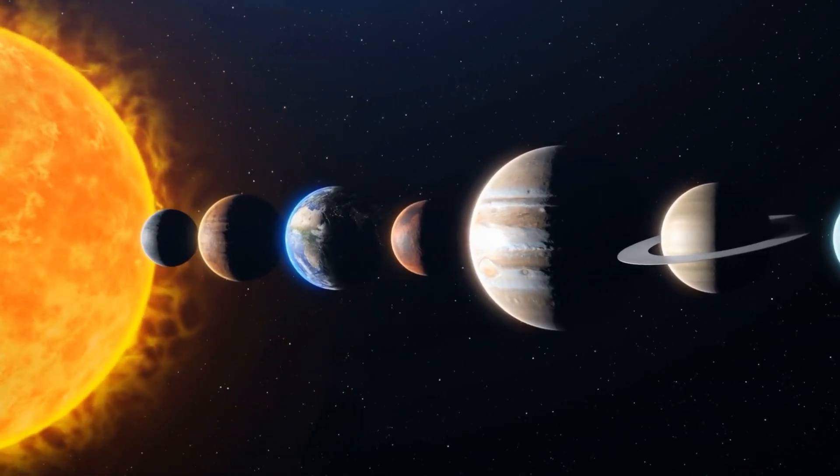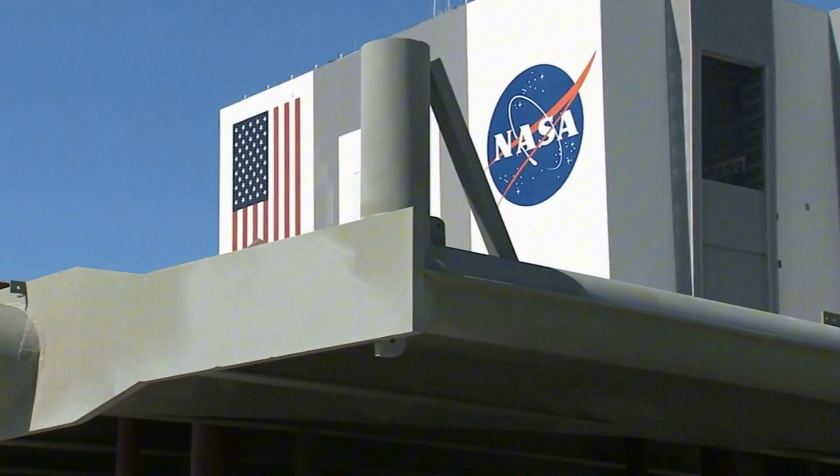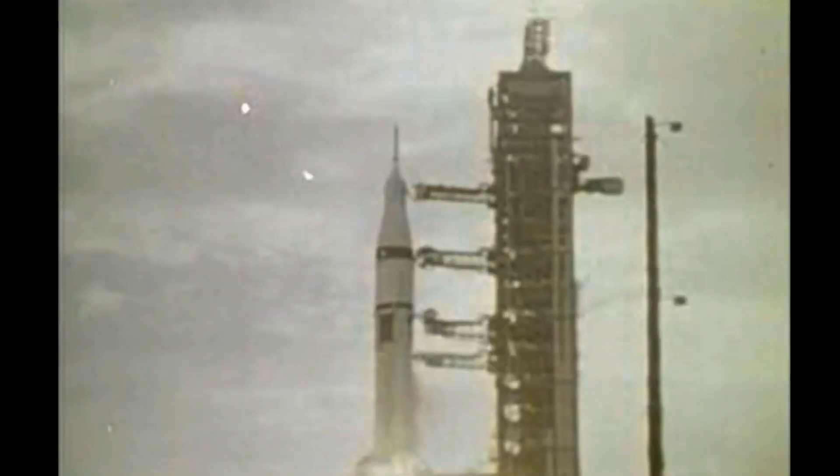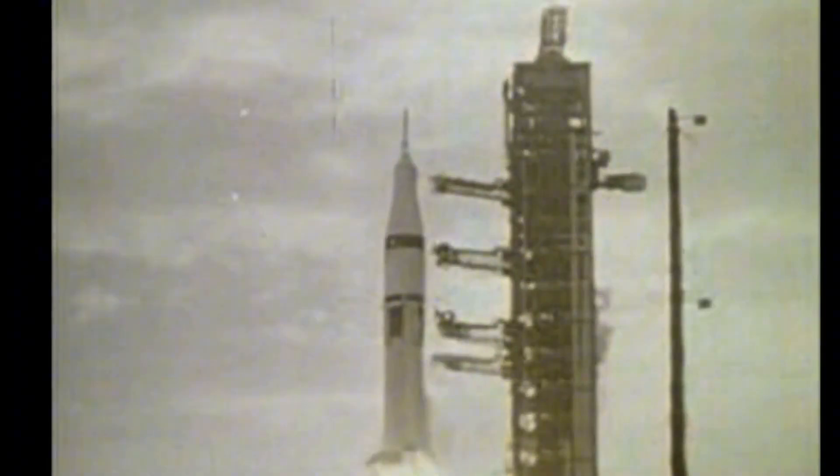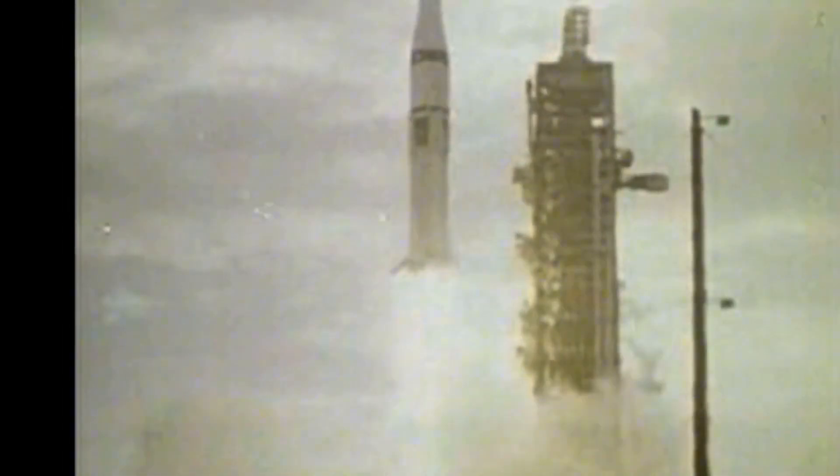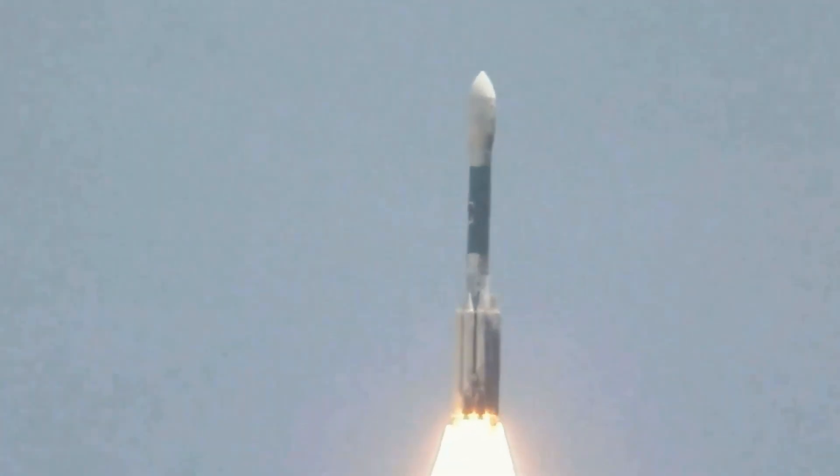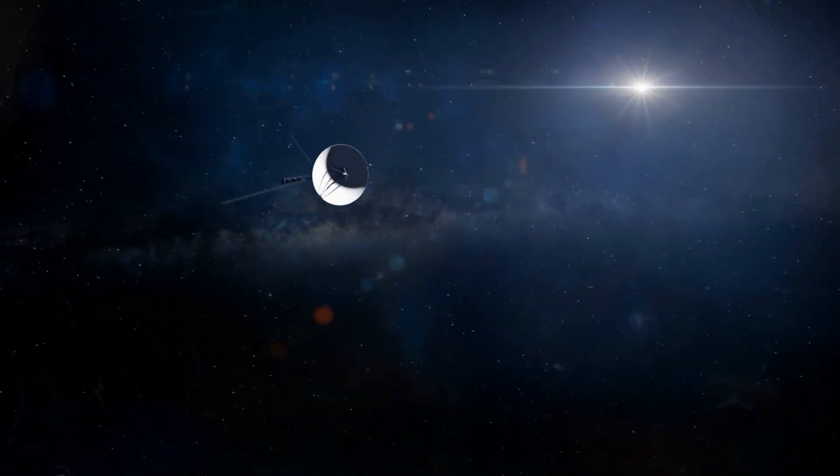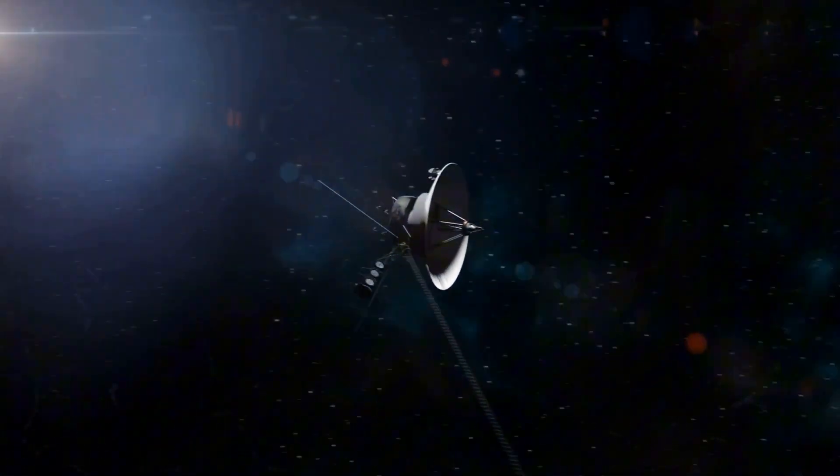Seizing this fleeting opportunity, NASA swiftly launched two identical spacecraft, Voyager 1 and Voyager 2, in the summer of 1977, just 15 days apart, to capitalize on this cosmic event. Unbeknownst to them, these twin explorers would go on to shatter all records in space mission history.